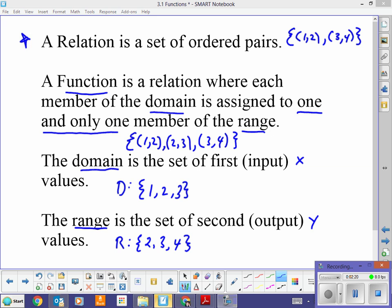So, when we say that each member of the domain is assigned to one and only one member of the range, what are we talking about? Let's look at this example here that I wrote in here. This member of the domain one is assigned only to two. This member of the domain two is assigned only to three. This member of the domain three is assigned only to four. So, right now, this is a function because every member of the domain is assigned to only one member of the range. What if I had another ordered pair in here on two, five?